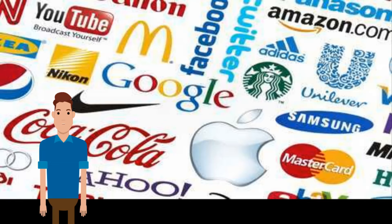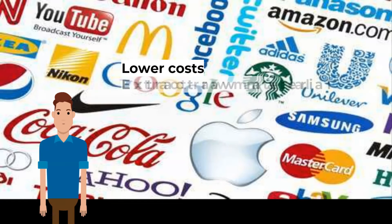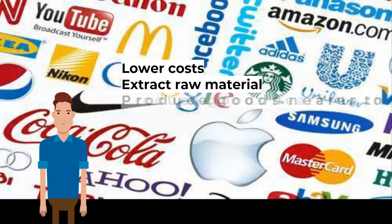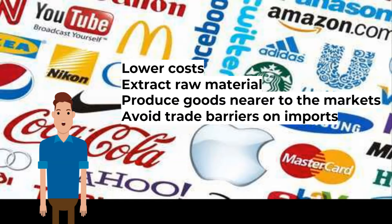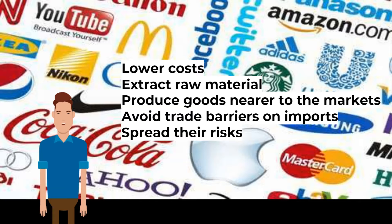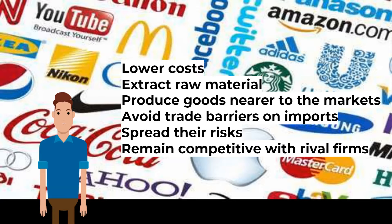Why do firms become multinationals? To produce goods with lower costs, as cheaper materials and labor may be available in other countries. To extract raw materials available in only a few countries — for example, crude oil in the Middle East. To produce goods nearer to their markets to avoid transport costs. To avoid trade barriers on imports, since if they produce goods in foreign countries they won't have to pay import tariffs or face quota restrictions. To expand into different markets and spread their risks. And to remain competitive with rival firms which may also be expanding abroad.